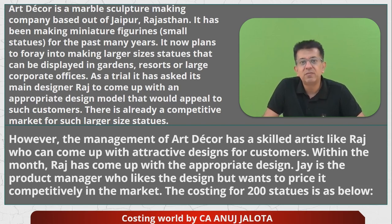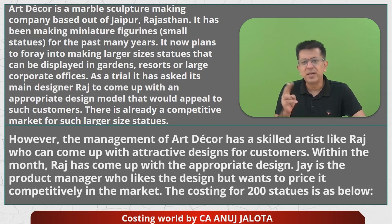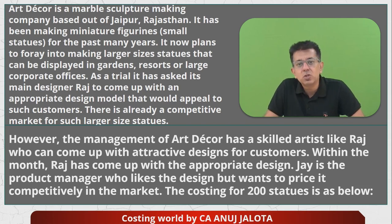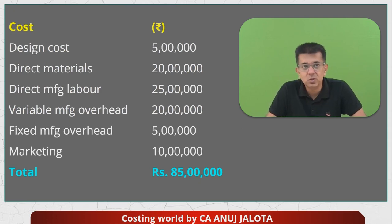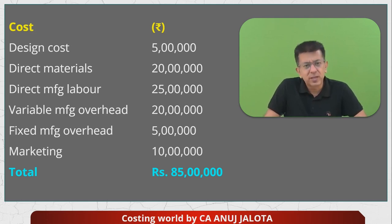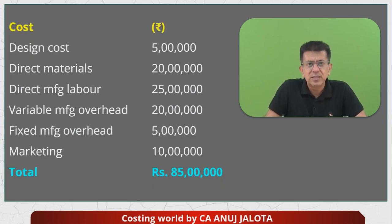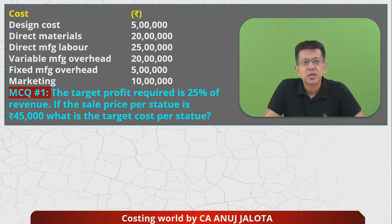Within the month, Raj has come up with the appropriate design. Jay is a product manager — remember their roles: Raj is the main designer, and Jay is a product manager who likes the design but wants to price it competitively. The cost for 200 such statues is: designing cost 5 lakhs, direct material 20 lakhs, direct manufacturing labor 25 lakhs, variable manufacturing overheads 20 lakhs, fixed manufacturing overheads 5 lakhs, and marketing cost 10 lakhs — total 85 lakhs.